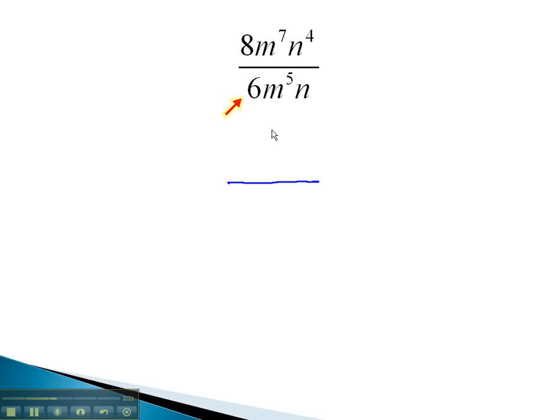8 and 6 are not exponents. We will divide or reduce them like we always have. Both are divisible by 2, giving us 4 over 3.